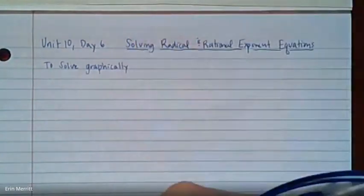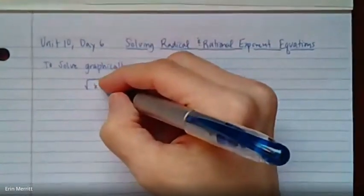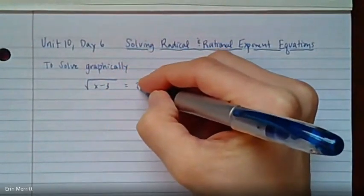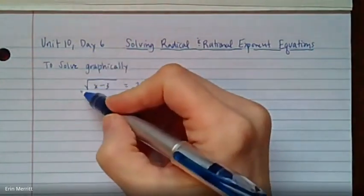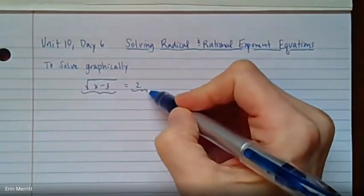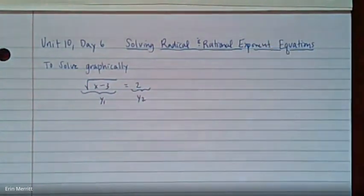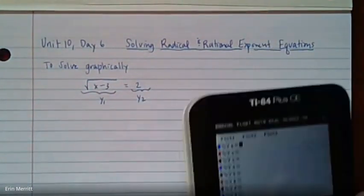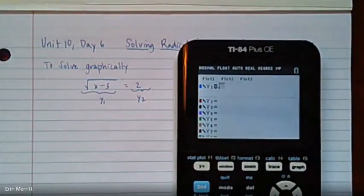Let me give you an example of what a radical equation would look like. If we have the square root of x minus 3 and then equals 2, we want to solve for where they're equal, just like you can solve any equation graphically. Let the left-hand side be y1, right-hand side be y2, and then take a look at what the graph looks like.